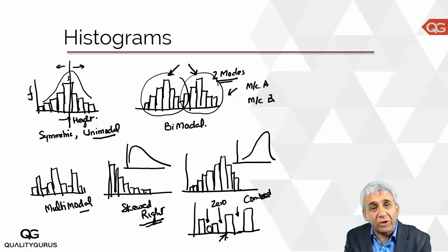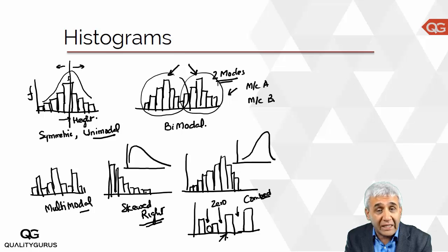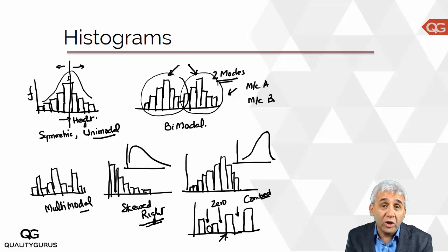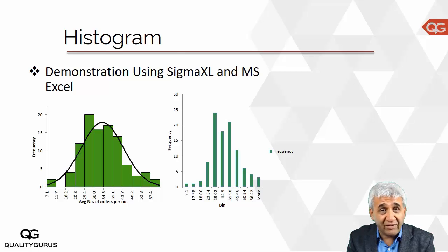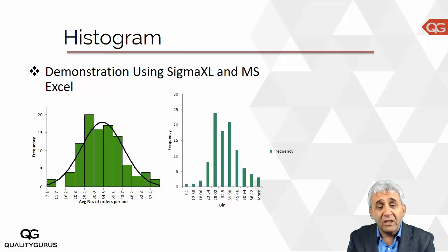These are the key shapes of histograms you might encounter: unimodal, bimodal, multimodal, right-skewed, left-skewed, combed, and truncated. Based on the shape, you can draw conclusions about the nature of your data. Now let's look at how to create a histogram using two tools: Sigma Excel and Microsoft Excel. We'll start with Sigma Excel first, then move to Microsoft Excel.